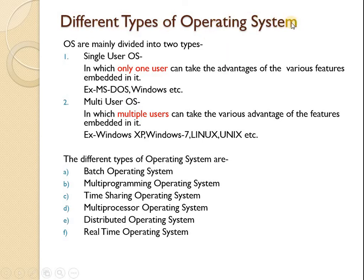Today we will learn the different types of operating system. Basically, the operating system is divided into two types: single-user operating system and multi-user operating system. We will now see the details of each.